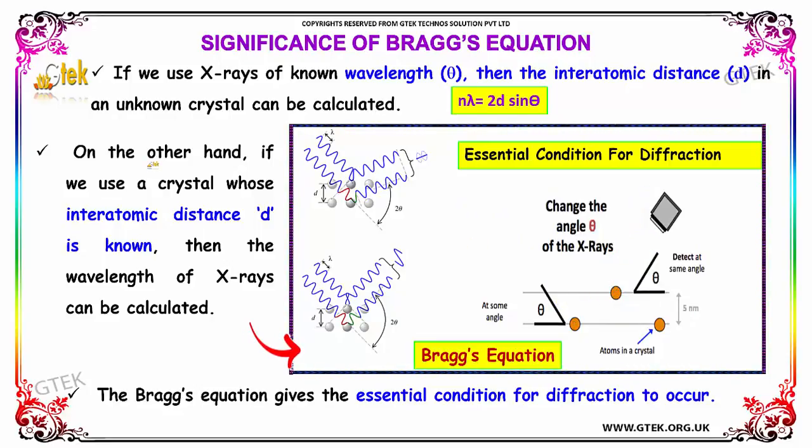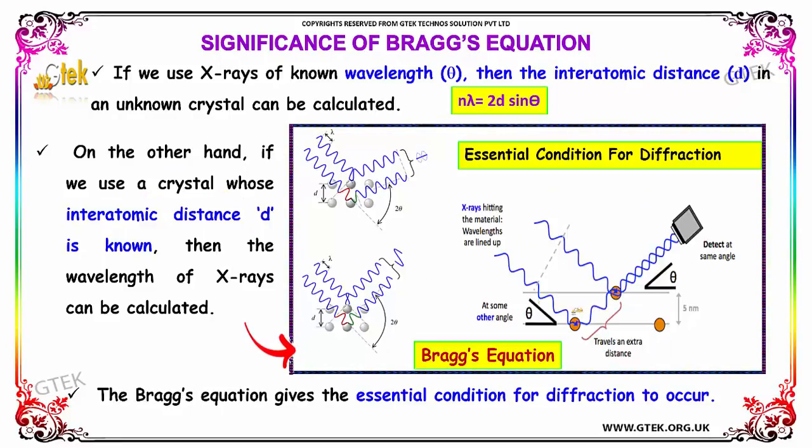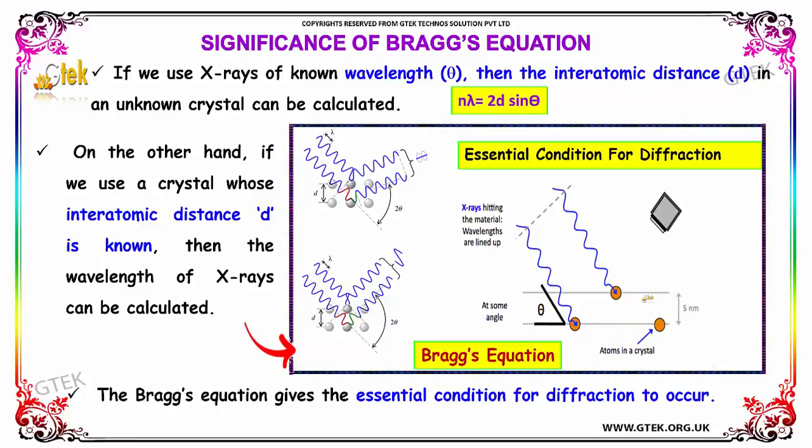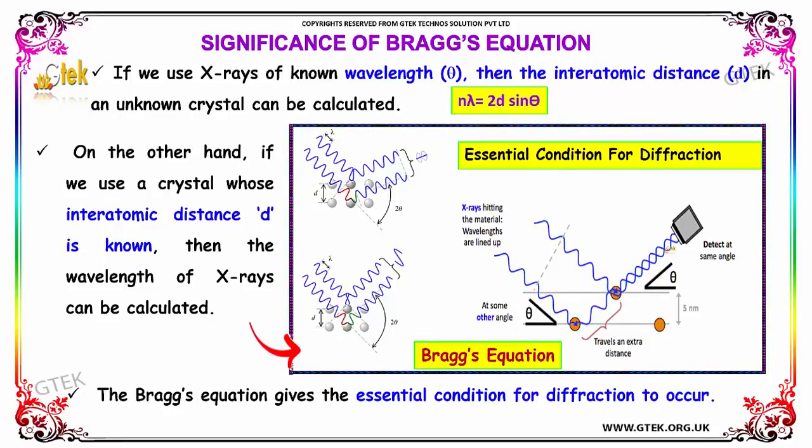On the other hand, if we use a crystal whose inter-atomic distance D is known, then the wavelength of X-rays can be calculated. The Bragg's equation gives the essential condition for diffraction to occur.